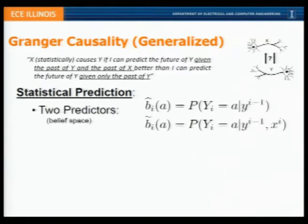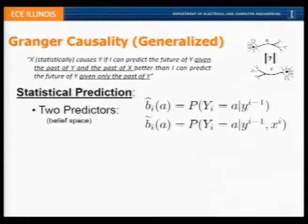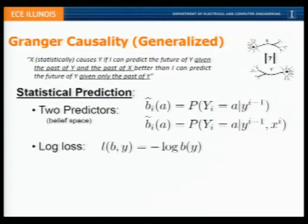Let's consider a general statistical prediction problem where we have two predictors. One will predict Y at time i using only the past of Y, and the other will also have access to the past of X. To keep the prediction general, we'll operate on belief spaces - not just assigning a single value in the prediction, but beliefs on all the possible outcomes. We'll assume for the time being that we know the underlying statistics, so these distributions are the true conditional distributions. Since we're dealing with distributions, we'll use log loss as a loss function, which has interpretations in data compression, gambling and portfolio theory, and other areas.